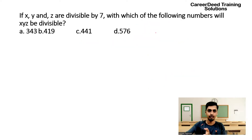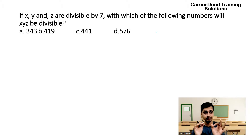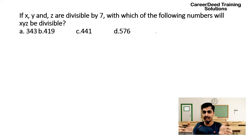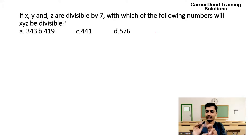Now question number 2. If X, Y, Z are each divisible by 7, which of the following numbers will X×Y×Z be divisible by? You have 4 options: 343, 441, 196, 415, 756.